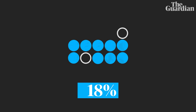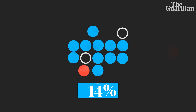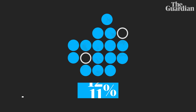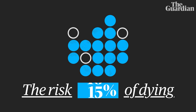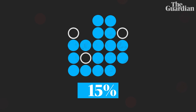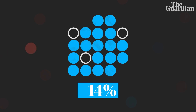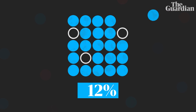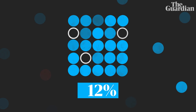So over time, as we fill in the gaps in our knowledge, our case fatality rate will get closer to the number we probably want to know — the risk of dying. But our case fatality rate will never get us completely there. Why? Because by definition, we're only counting known cases, and we could be missing loads of hidden infections.